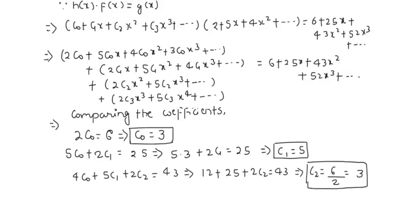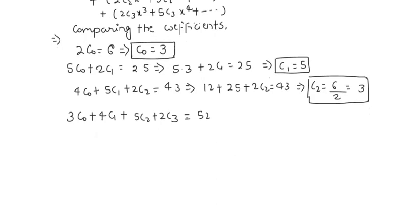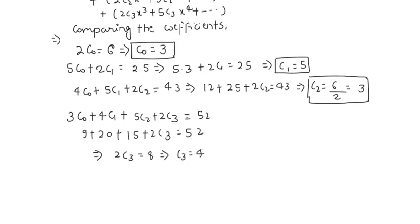Now we compare the coefficient of x³: 3c₀ + 4c₁ + 5c₂ + 2c₃ = 52. Substituting: 3(3) + 4(5) + 5(3) + 2c₃ = 52, which gives 9 + 20 + 15 + 2c₃ = 52, so 2c₃ = 52 − 44 = 8, giving c₃ = 4.